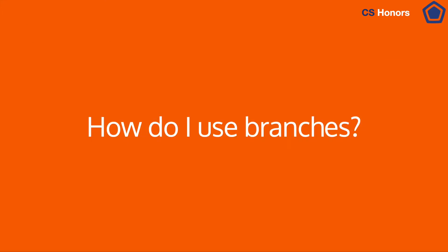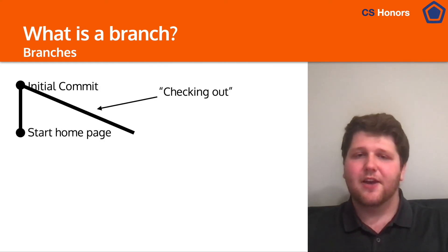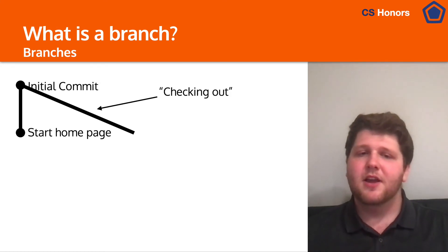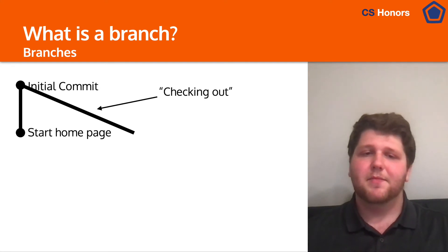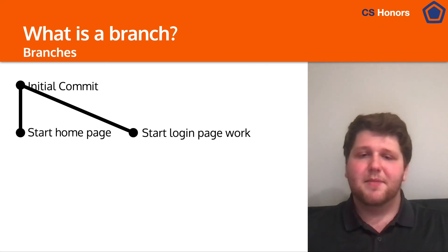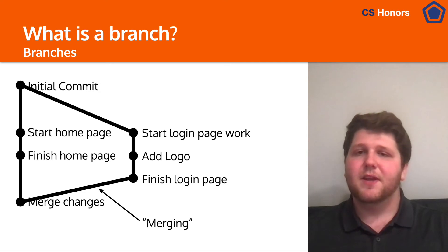So how do you use branches? Branches are really simple to work with. First, there's what's called checking out — telling Git that any new snapshots you make no longer apply to the branch you're already on. By default, you're on a branch called main, but you can check out to a new branch and make your commits onto that branch instead. Then you can make a commit on a separate branch, add your logo, do everything else like normal, and when you want to recombine, you merge the two branches together.